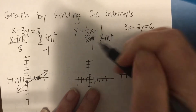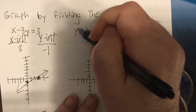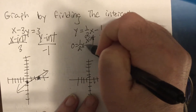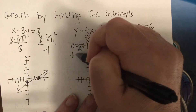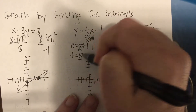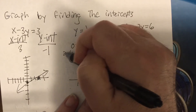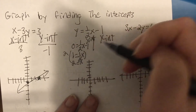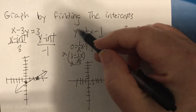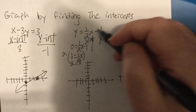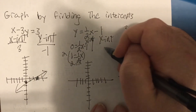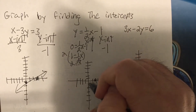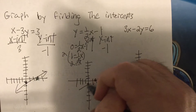For the x-intercept, put zero in for y — zero equals one-half x minus one, add one, then multiply by two, so the x-intercept is two. The y-intercept — if it's solved for y, the y-intercept is the number added to the x term — so it'd be negative one. So we have (2, 0) and (0, -1).